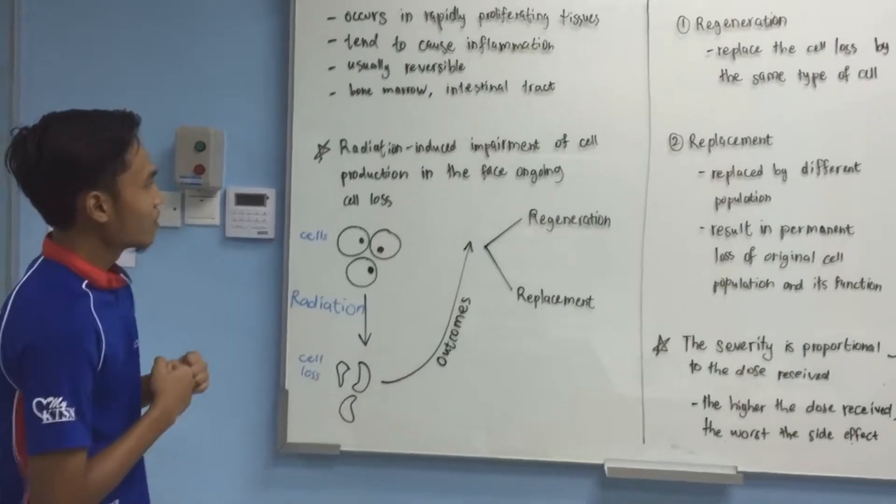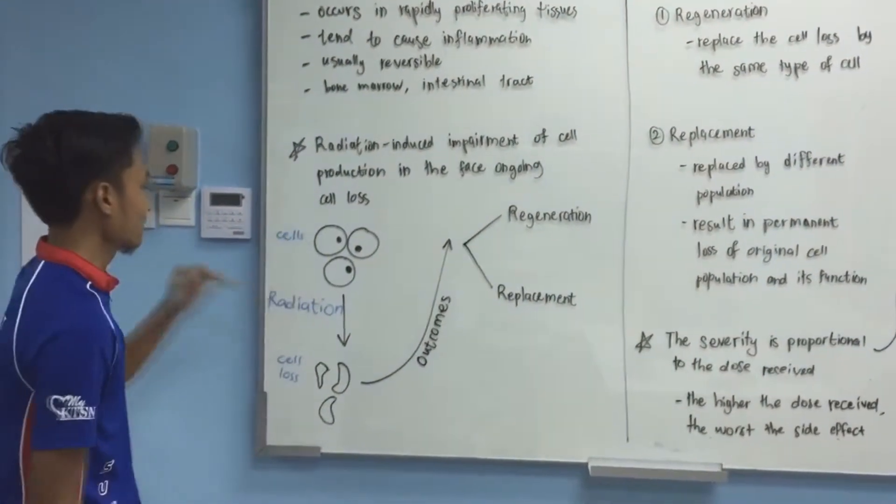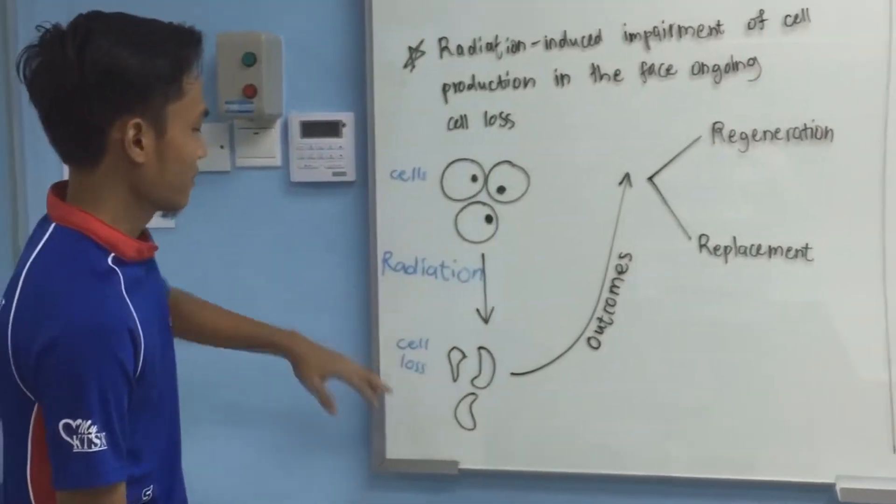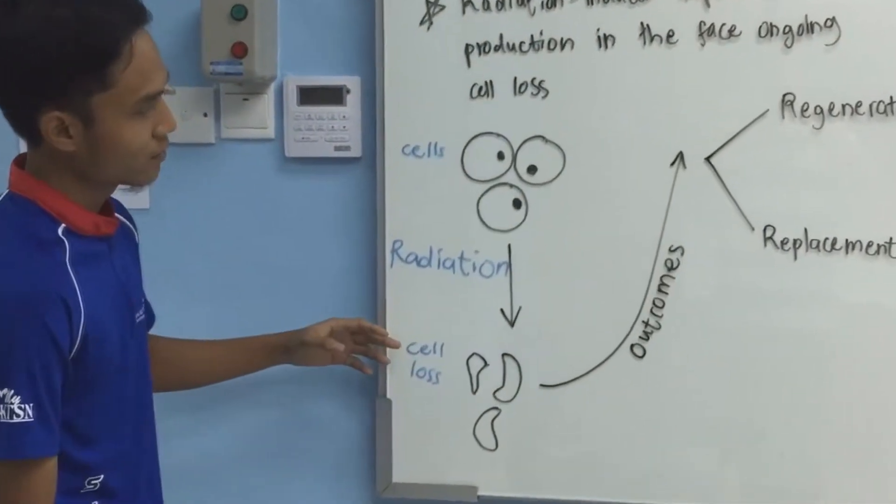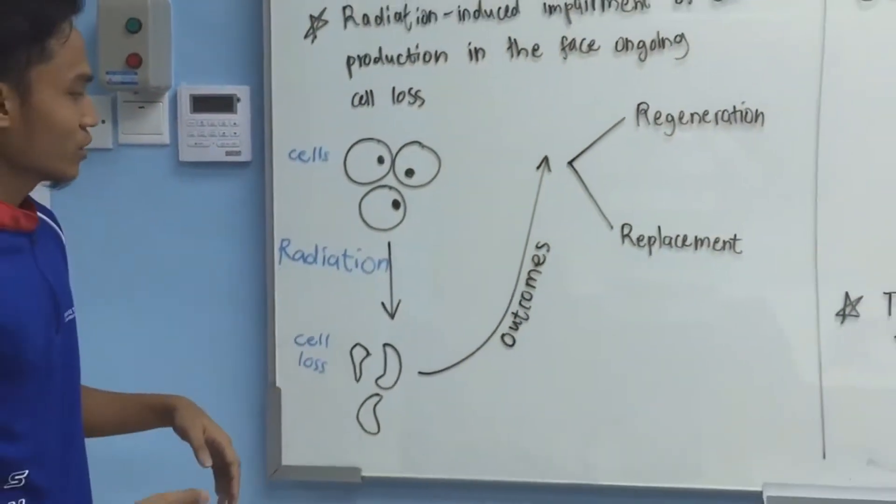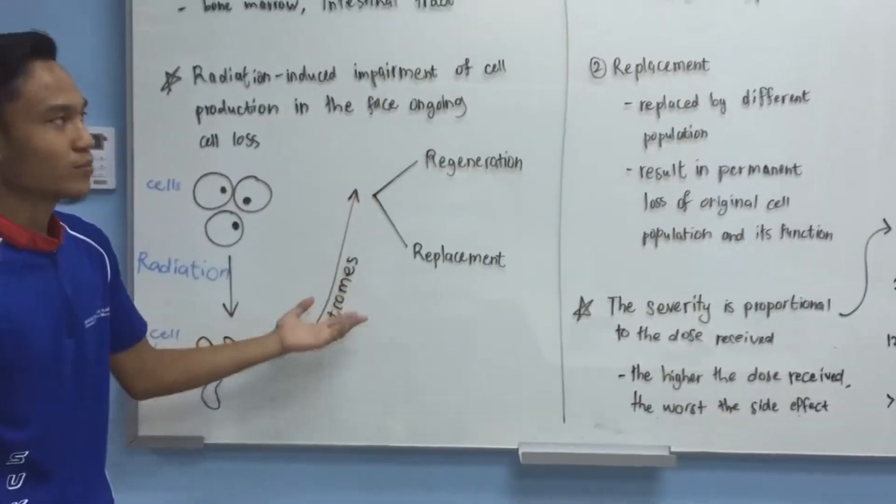Due to ongoing cell loss, the radiation penetrates the cell and then the cell undergoes ongoing cell loss. This comes out with two possible outcomes: regeneration and replacement.